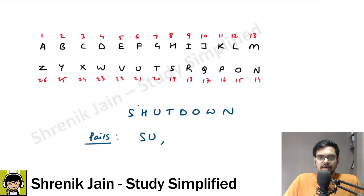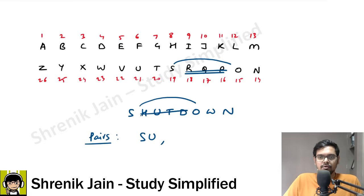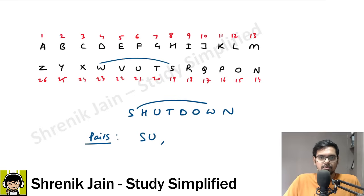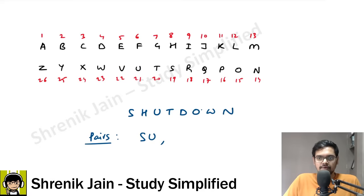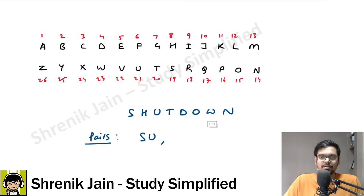What about S-T? In the alphabet, S and T have zero elements in between, but here in the word they have two elements in between — so not valid. S-D: they are way apart, no point of discussion. S-O: three elements in the word but four in the alphabet — condition fails. S-W: three elements in the word but more than three in the alphabet — condition not satisfied. S-N: six elements between S and N in the alphabet, but four in the word — not satisfied. So S is done, cancel it.